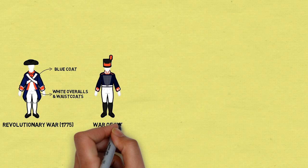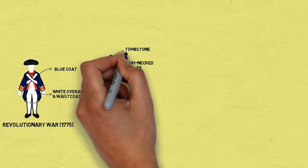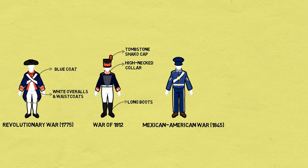War of 1812: The US Army again updated and standardized its uniforms. They featured high-necked collars and front-facing buttons. In some cases when blue wool could not be found, gray wool was used. These coats were also matched with tombstone shackle caps.